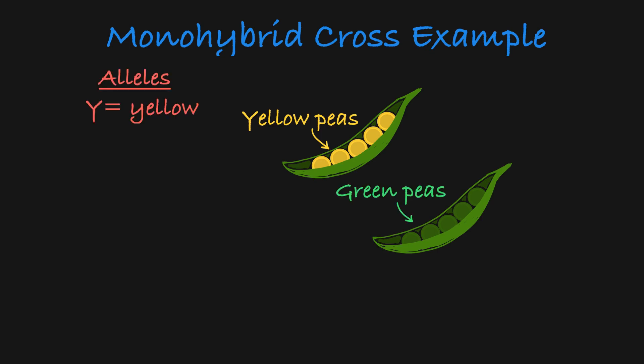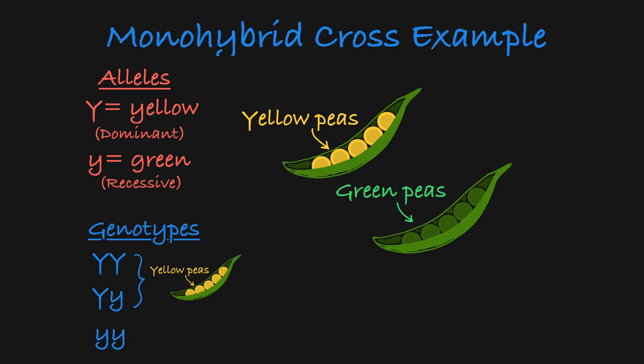The yellow phenotype comes from the presence of the dominant allele, and the green phenotype is associated with the recessive allele. So the plant will produce yellow peas if it is homozygous dominant or heterozygous, and the peas will be green if the plant is homozygous recessive.